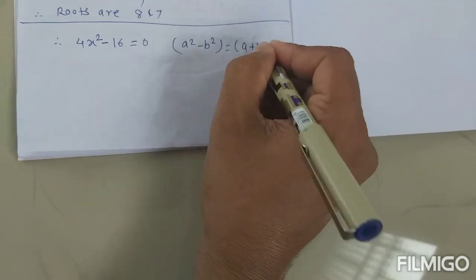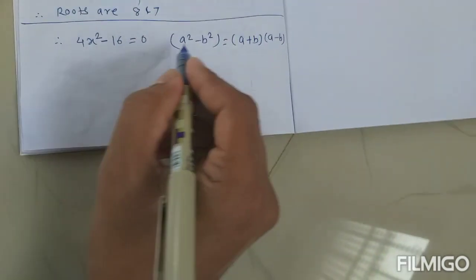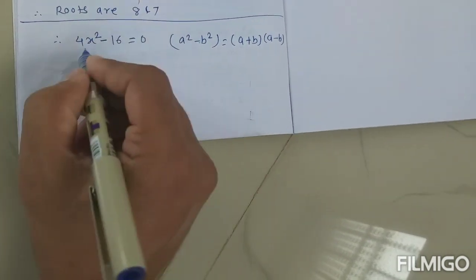What are the factors of this? a plus b, a minus b. Now in this format you have to write this.